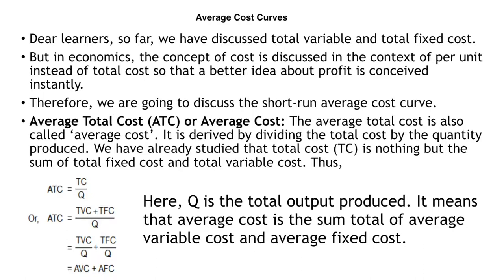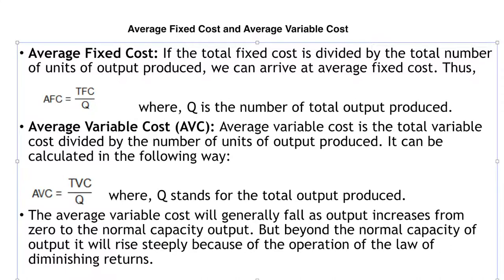Thus ATC can be derived by dividing TC by Q, or ATC equals (TVC + TFC) divided by Q, which equals TVC/Q plus TFC/Q, giving us AVC plus AFC. Here Q is the total output produced. It means that average cost is the sum of average variable cost (AVC) and average fixed cost (AFC). Now what are average fixed cost and average variable cost?